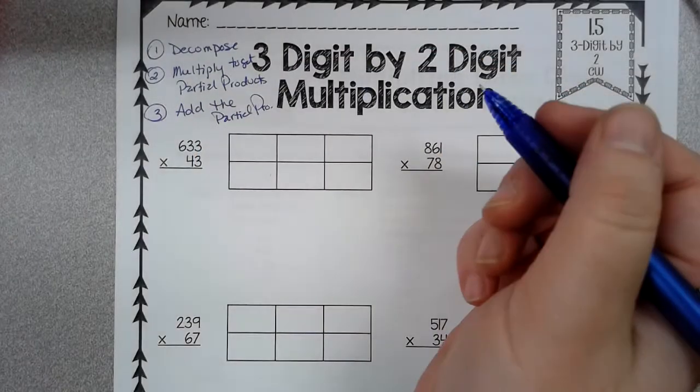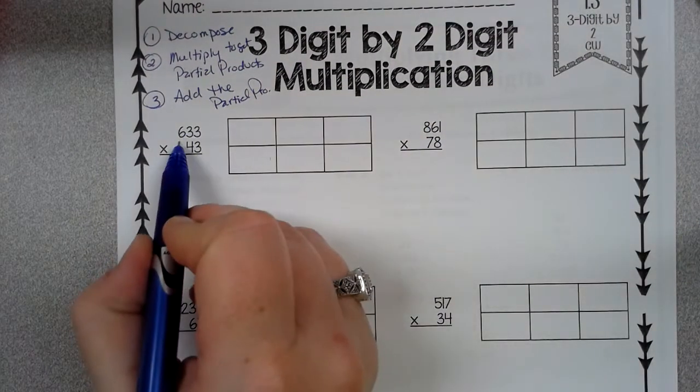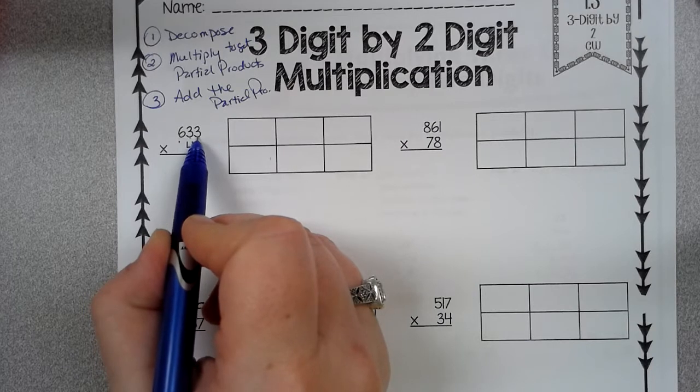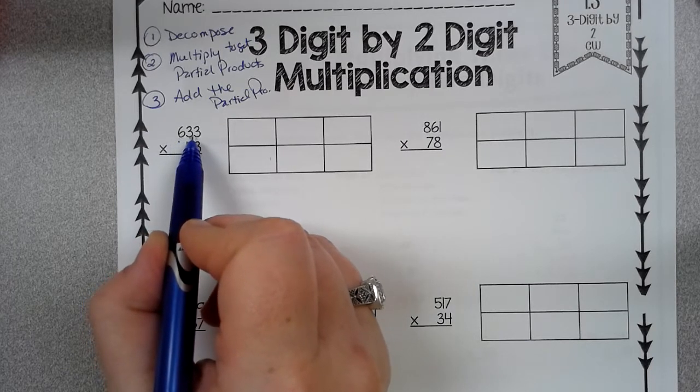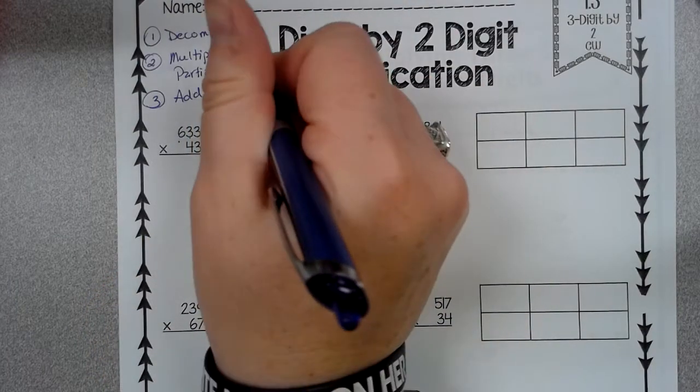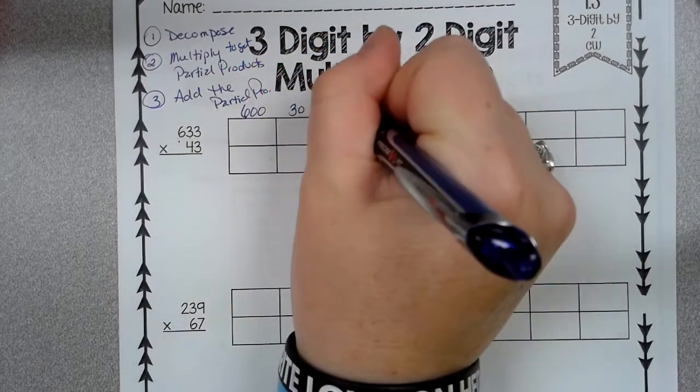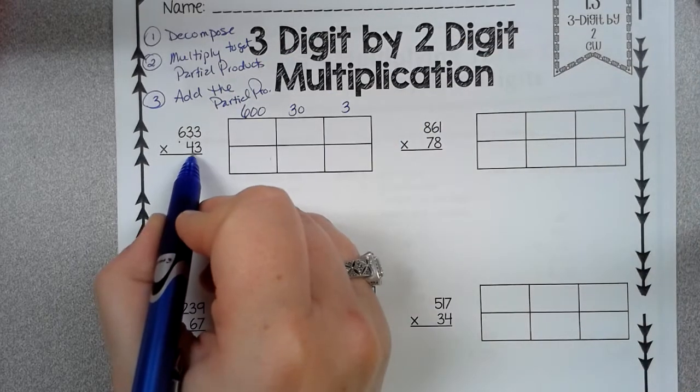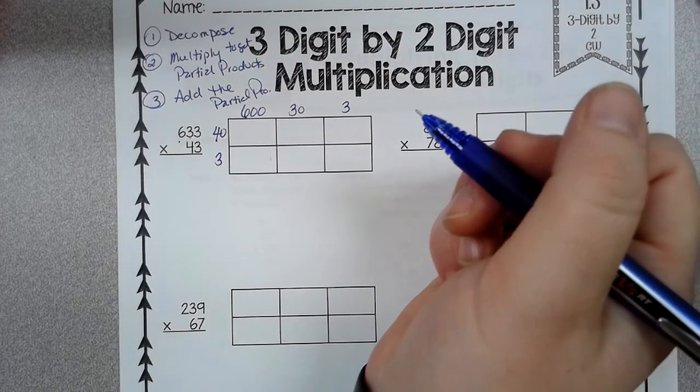So let's look right here. 633 decomposed. You have the 600, the 30, and the 3. Because the 6 is in the 100's place, the first 3 is in the 10's place, the second 3 is in the 1's. So 600, 30, 3. Decompose in 43. The 4 is in the 10th spot, the 3 is in the 1's.